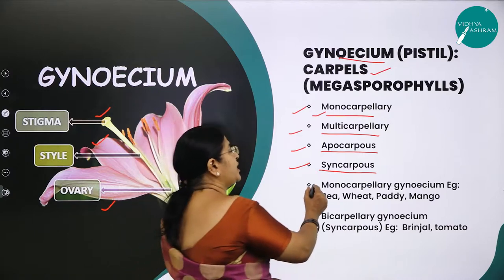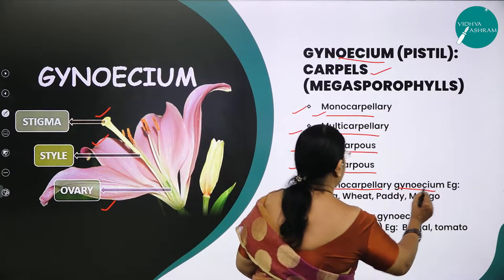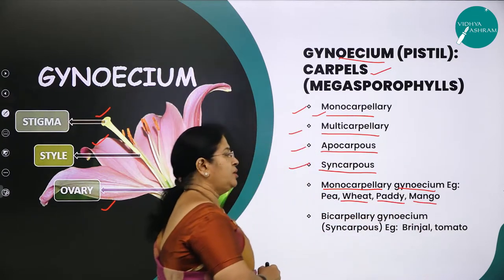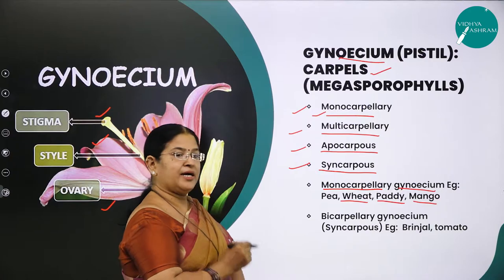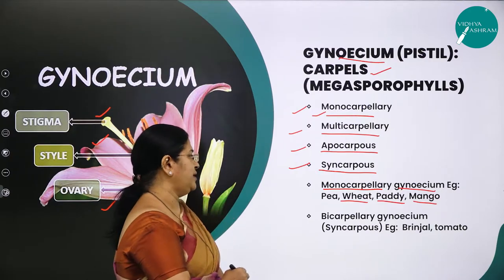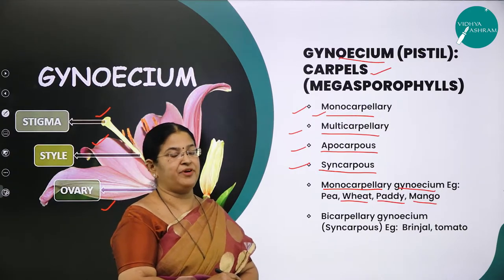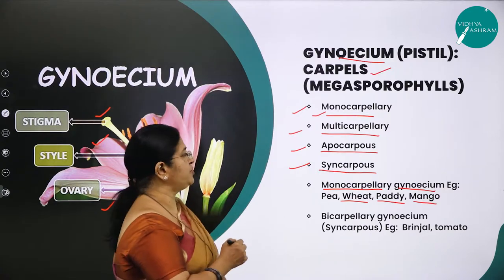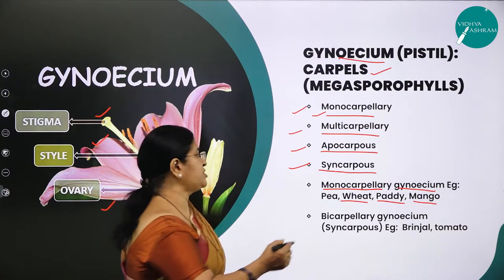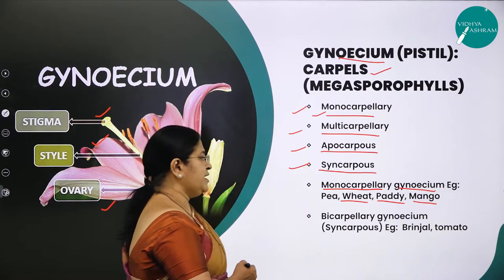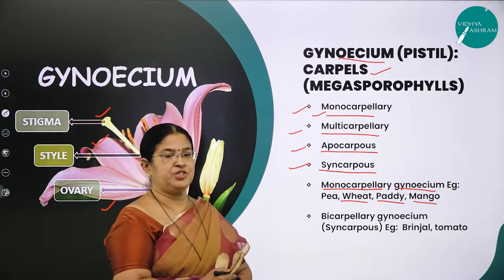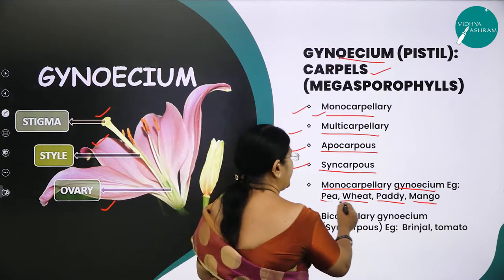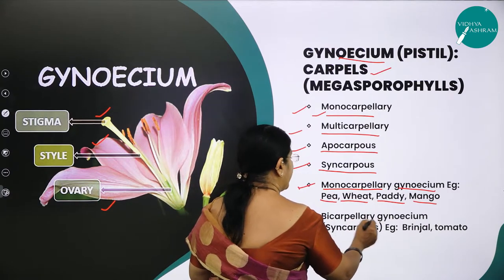What is an example of monocarpellary gynoecium? Examples are pea, wheat, paddy, and mango. Monocarpellary means a gynoecium or pistil having a single carpel. Multicarpellary means having more than two carpels. Apocarpous means carpels are free; syncarpous means carpels are fused. Bicarpellary refers to a gynoecium or pistil containing two carpels.